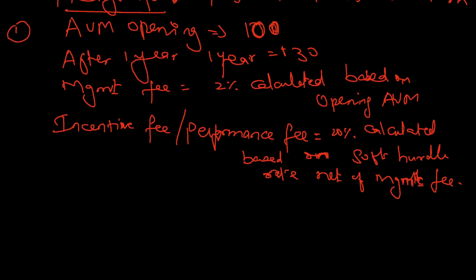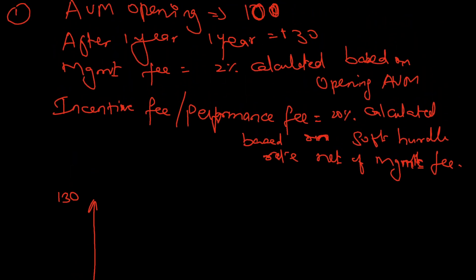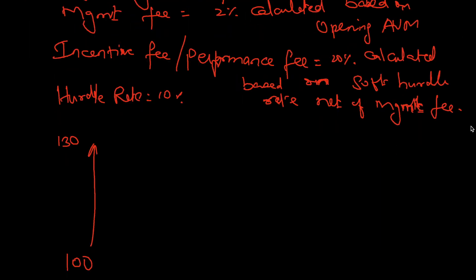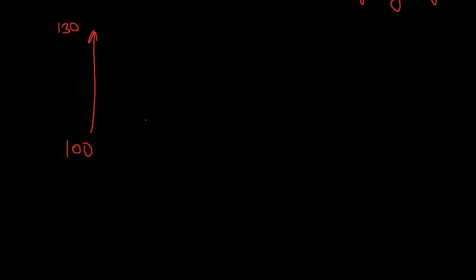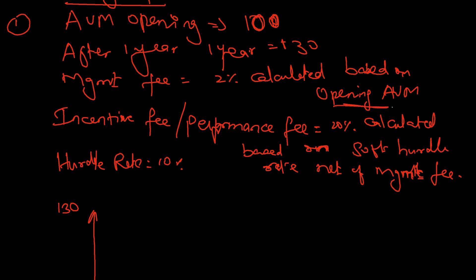So let's do this sum now. Initially it was 100, then it reached 130 in a year's time. I have not mentioned the hurdle rate yet — let's say hurdle rate is equal to 10%. So 100 has reached 110. Now we need to first calculate the management fee, which is calculated based on opening assets under management as per the question.